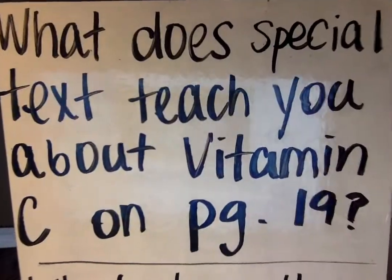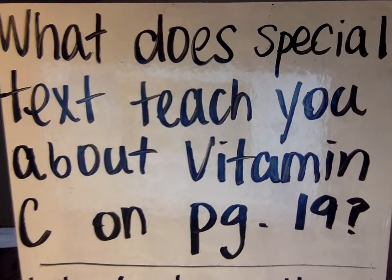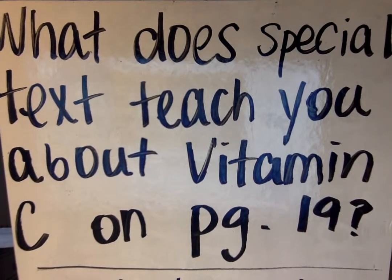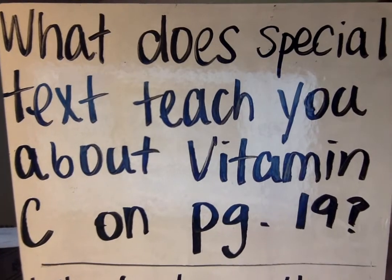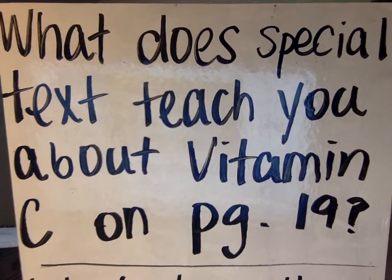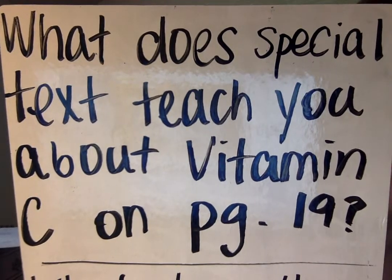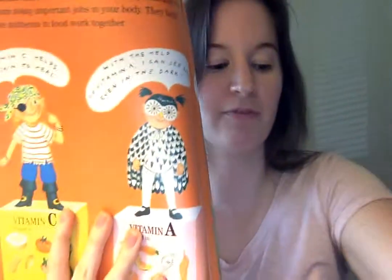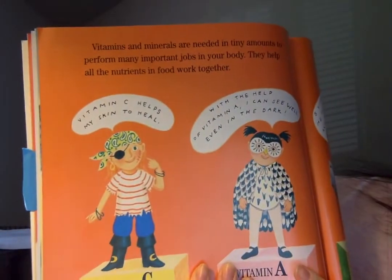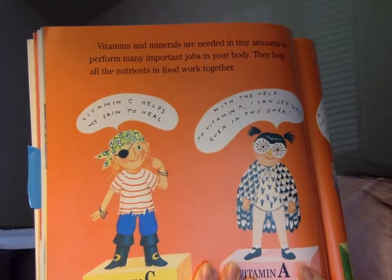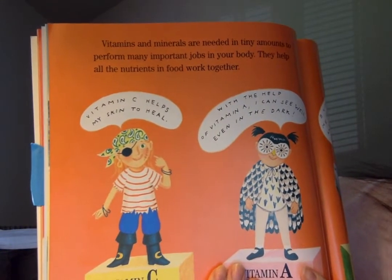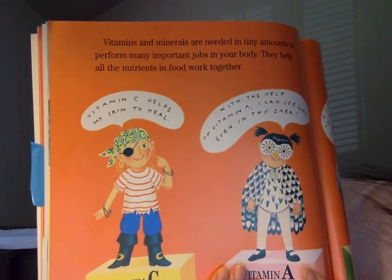Here we have our first question: What does special text teach you about vitamin C on page 19? We're going to flip to page 19 first just to refresh ourselves of what happens on this page. I'm going to read the text up top first: Vitamins and minerals are needed in tiny amounts to perform many important jobs in your body. They help all the nutrients and food work together.